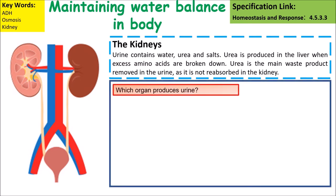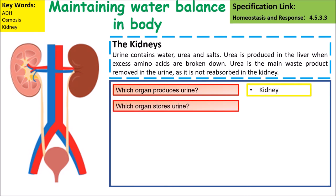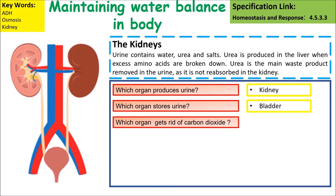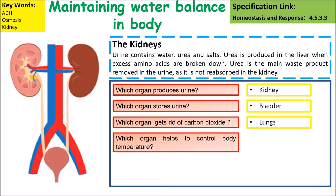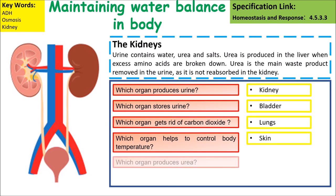Which organ produces urine? The kidneys. Which organ stores urine? The bladder. Which organ gets rid of carbon dioxide? The lungs. Which organ helps control body temperature? The skin. Which organ produces urea? The liver.